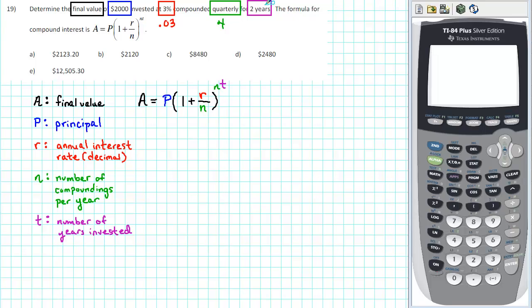So just substitute these values into the formula. We get A equals 2,000 times 1 plus .03 over 4 raised to the 4 times 2 power.